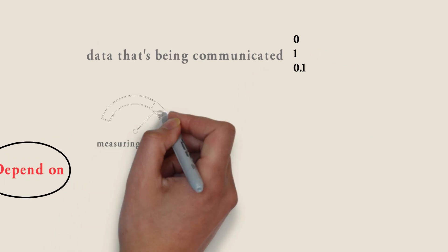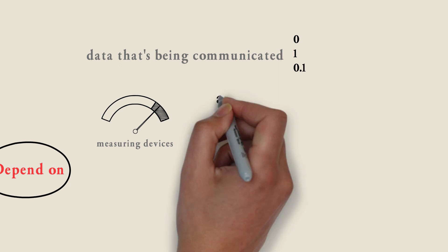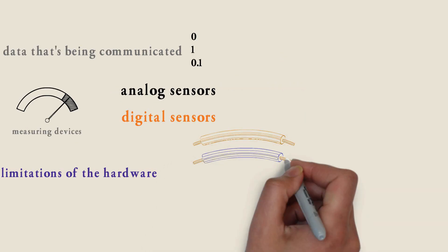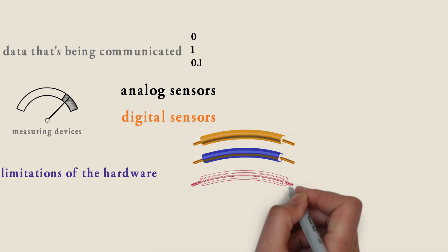The type of measuring devices being used, like analog sensors or digital sensors, or the limitations of the hardware. Thus the connection will be 2 wires or 3 wires.